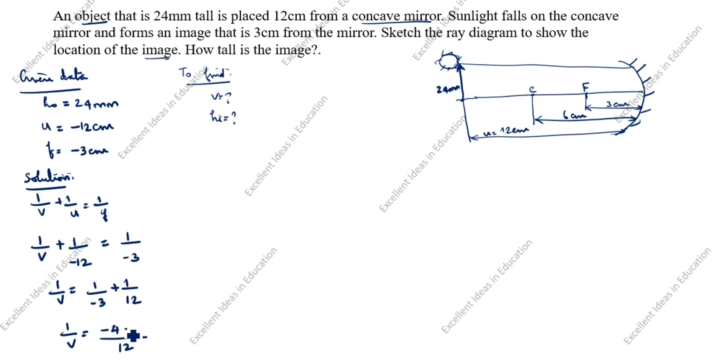1 by V is equal to, take the common denominator 12. 4 threes are 12, so minus 4 plus 1. 1 by V is equal to minus 3 by 12. V is equal to minus 12 by 3. 1 three is 3, 4 threes are 12. So V is equal to minus 4 centimeter.